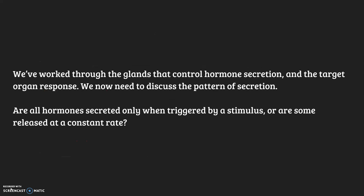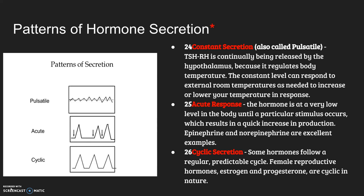We've worked through glands that control secretion and the target organ response. Now we want to look at the pattern of secretion, and this is going to be on your test. There's constant secretion — also called pulsatile secretion — where some hormones are always in your bloodstream; the hypothalamus regulates your body temperature with a constant level of hormones. Acute response is where the hormone is at a very low level generally, but in a short-term potentially hazardous situation your body rapidly produces it — epinephrine in a panic situation is one example. The third type is cyclic — hormones that follow regular and predictable cycles, like reproductive cycle hormones in females.